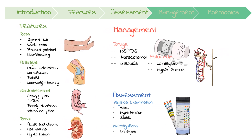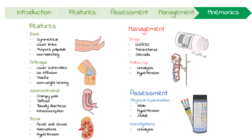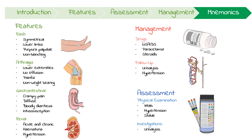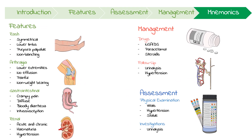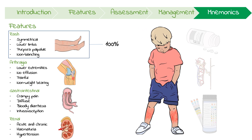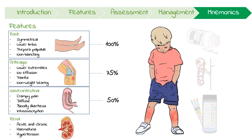Let's finish up with a review to help you remember some of this stuff about HSP. One common mnemonic is that 100% of patients have the rash, 75% have arthritis, 50% have abdominal pain, and 25% have renal involvement.